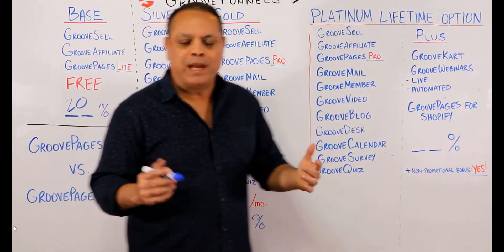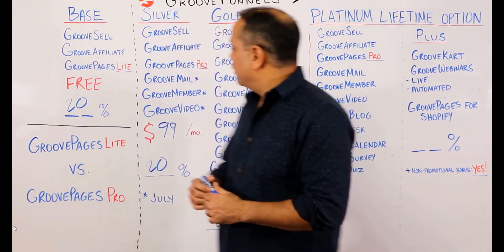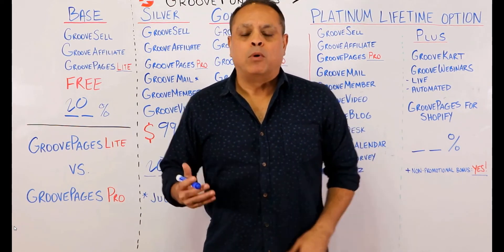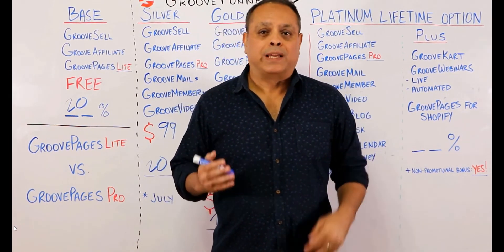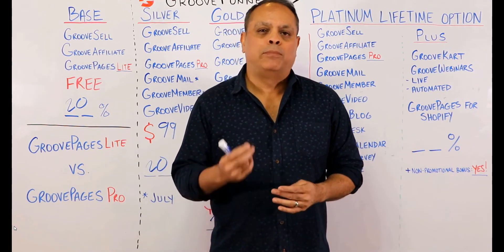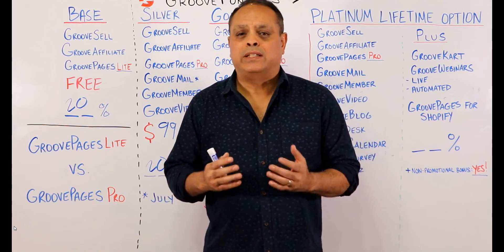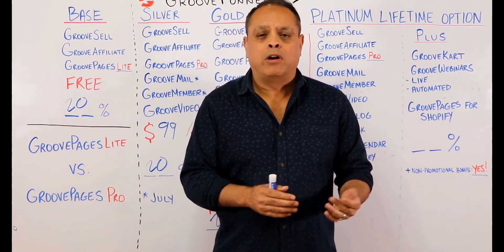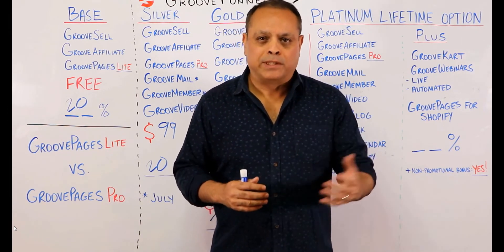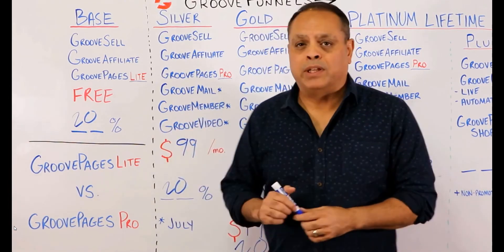GrooveMail is a CRM like MailChimp, except it's more powerful — more like ActiveCampaign or Infusionsoft. It will allow you to do tagging and behavioral-based email marketing. Meaning: if they see this page, or reach a certain timestamp in a video, or attend a webinar, you can send this email, this voice blast, or this text message. For a full feature comparison, compare GrooveMail to something like ActiveCampaign.